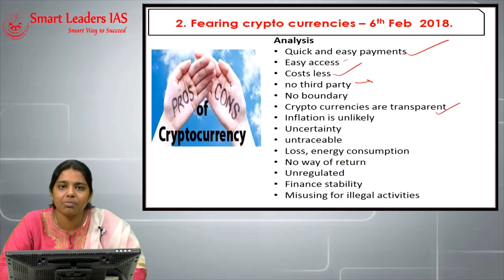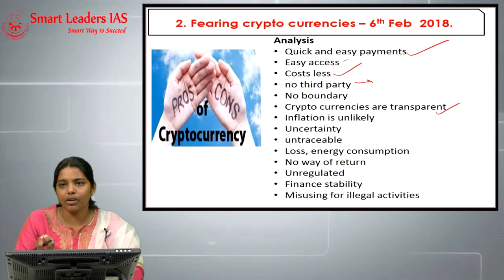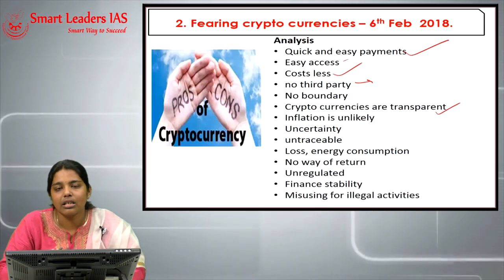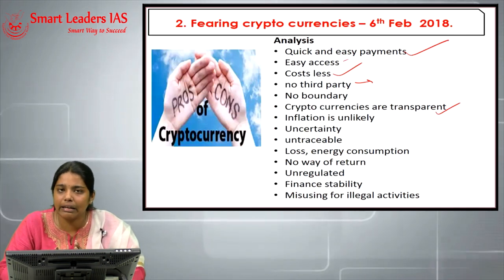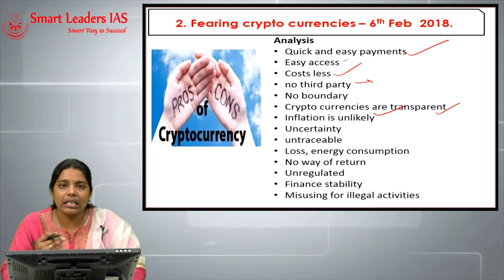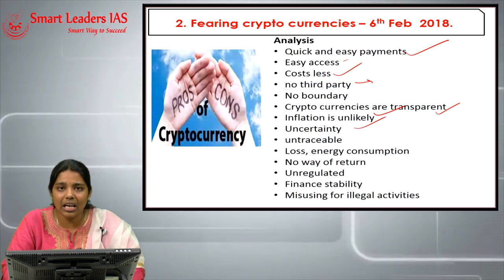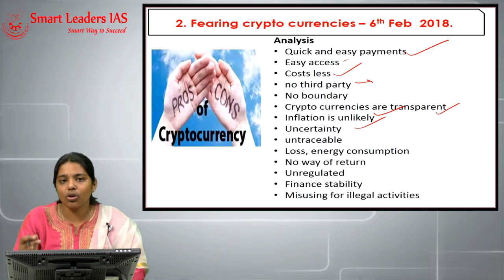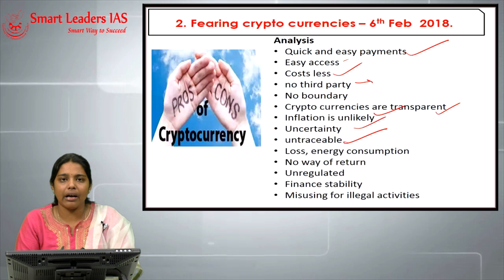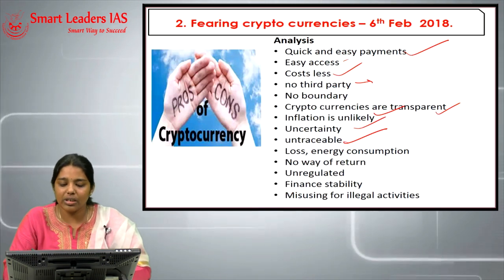Cryptocurrencies are considered more transparent because every transaction is recorded in a ledger. Inflation is highly unlikely with cryptocurrencies. However, the dark sides include: uncertainty — once lost it cannot be retrieved; it is highly untraceable despite ledger recording; and energy consumption is enormous — mining one Bitcoin consumes as much electricity as electrifying an entire village.